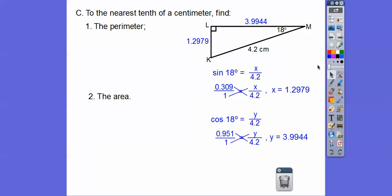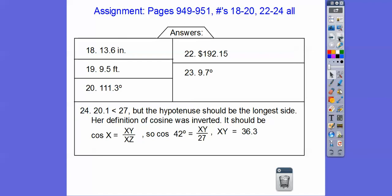When we cross-multiply, we get x to be 1.2979 and y to be 3.9944. Now, I know it says round to the nearest tenth, but I don't like rounding until the very end. The perimeter is the sum of those, and they add up to about 9.5. The area, this is the base and this is the altitude. Area of a triangle is 1/2 base times altitude. So we would get 2.6 centimeters squared. Remember, area is always square units, and perimeter is always just plain old units. If you are in our class, that's going to be your assignment. Take care. Hope that makes sense.